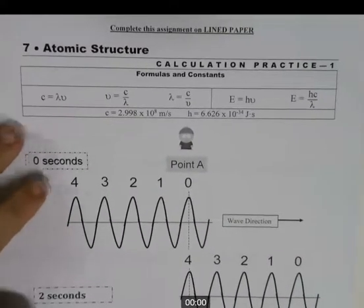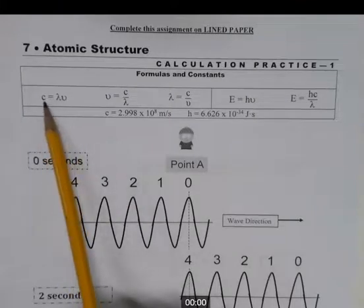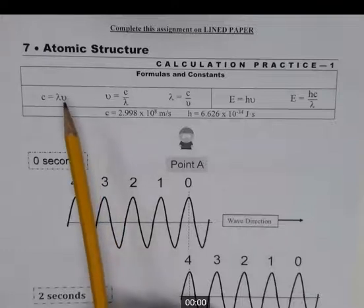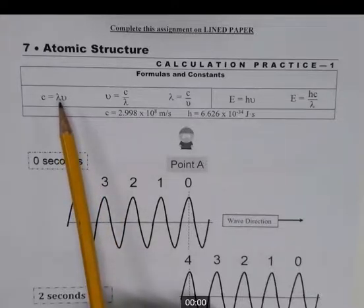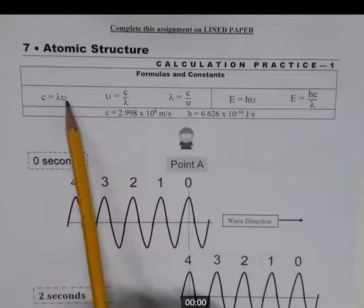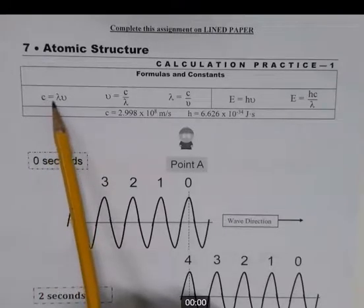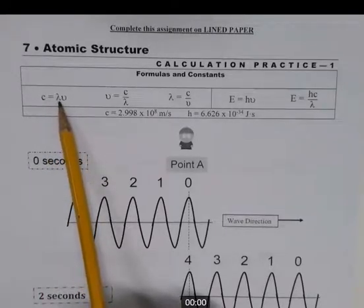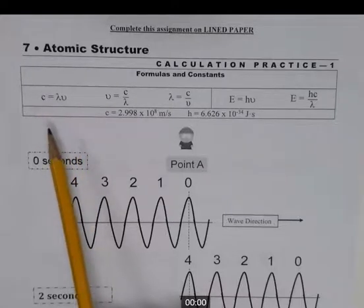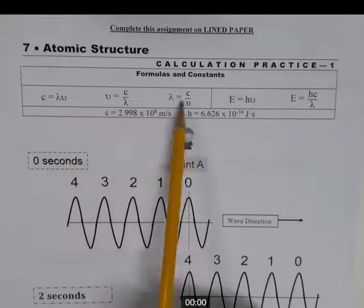Let's go over a couple of formulas that were in the notes. The wave speed equation for light: c is not a variable, it's a constant — the speed of light, approximately 3 times 10 to the 8th meters per second. Lambda is the wavelength, and nu (which looks like a combination of v and u) is the frequency. Wavelength times frequency equals speed.